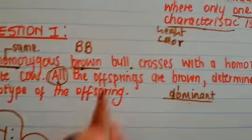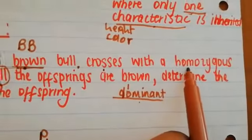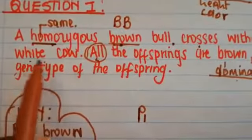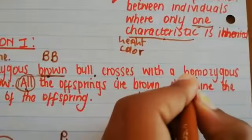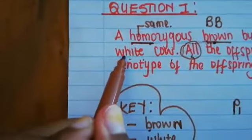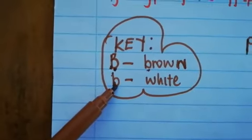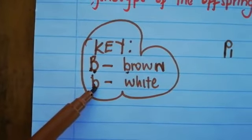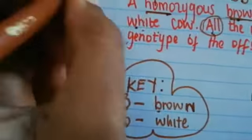Then it crosses with a homozygous white cow. Again, here we have homo, which means same. But let's go and look at the color. It's white. Let's go to our key. White is represented by small letter b. So since it's same alleles, then it's going to be a b and a b.